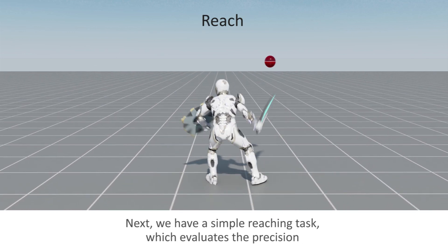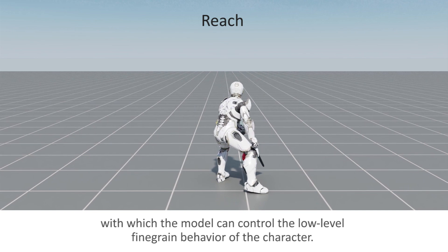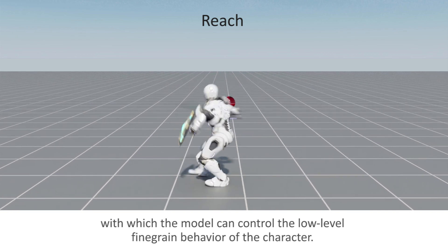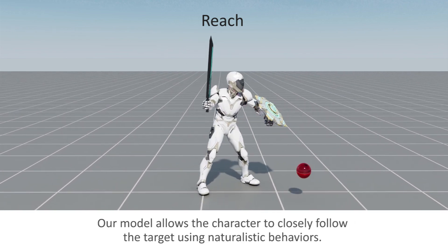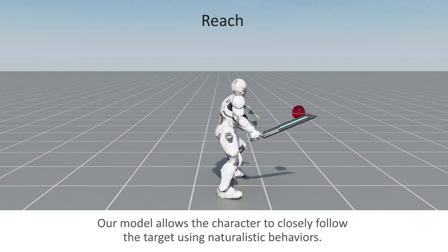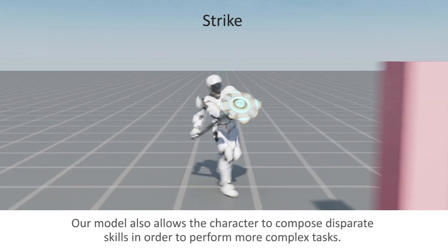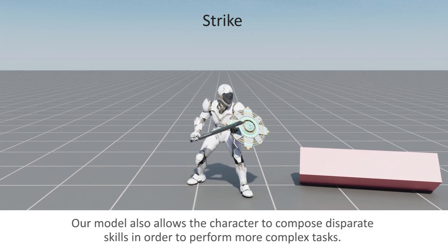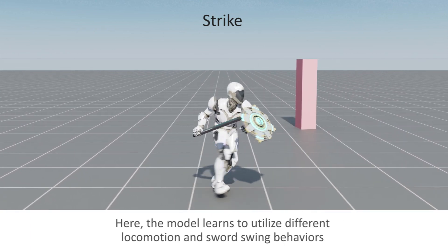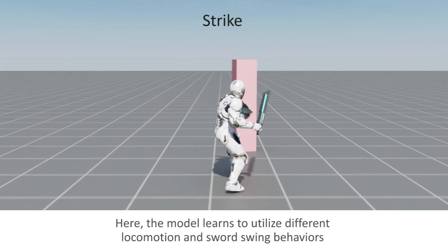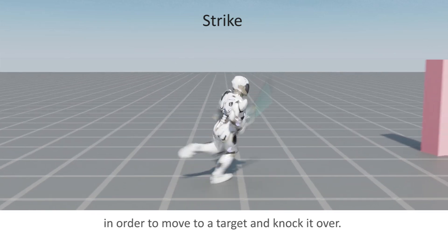Next, we have a simple reaching task, which evaluates the precision with which the model can control the low-level fine-grained behavior of the character. Our model allows the character to closely follow the target using naturalistic behaviors. Our model also allows the character to compose disparate skills in order to perform more complex tasks. Here, the model learns to utilize different locomotion and sword-swing behaviors in order to move to a target and knock it over.